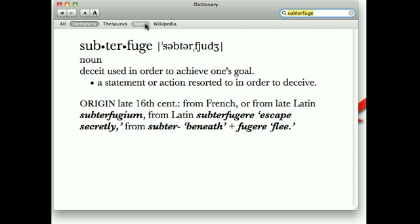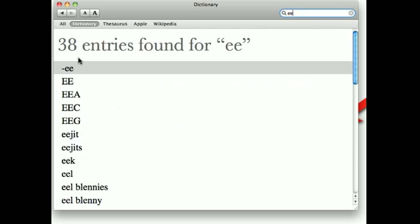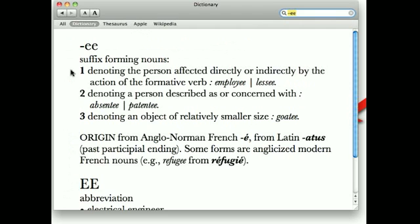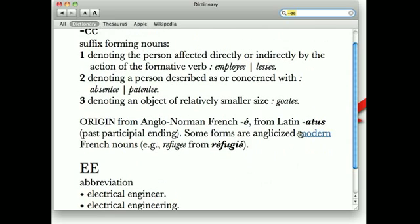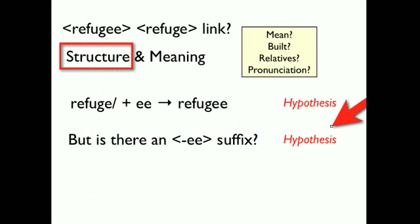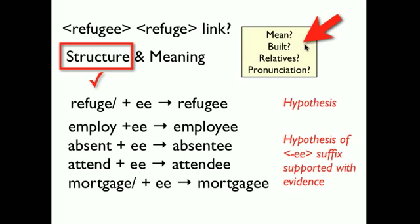If I type in a double E, I see that dash, and I'm already looking like I'm in good shape. It says there is a double E suffix forming nouns. I look through here, and I see some examples of words that employ E that make sense. I also went to the word searcher.